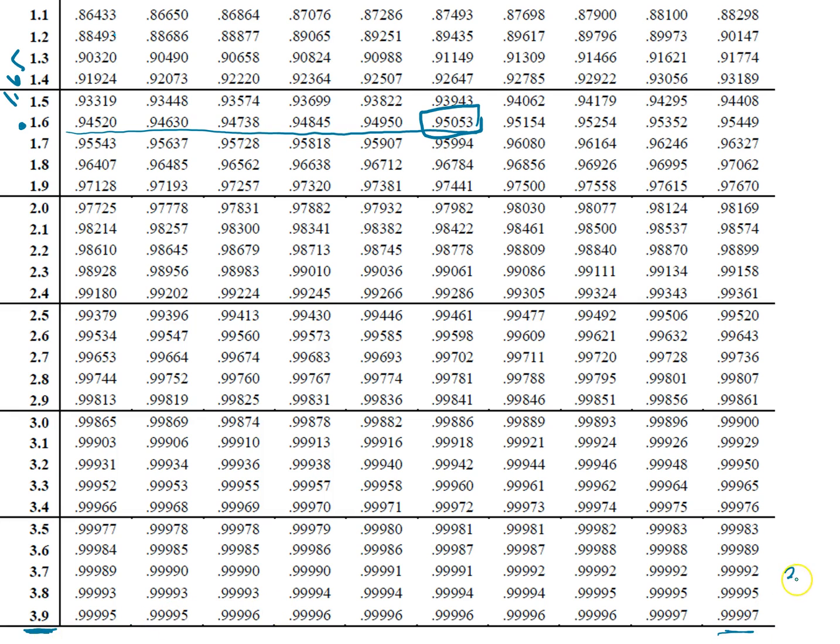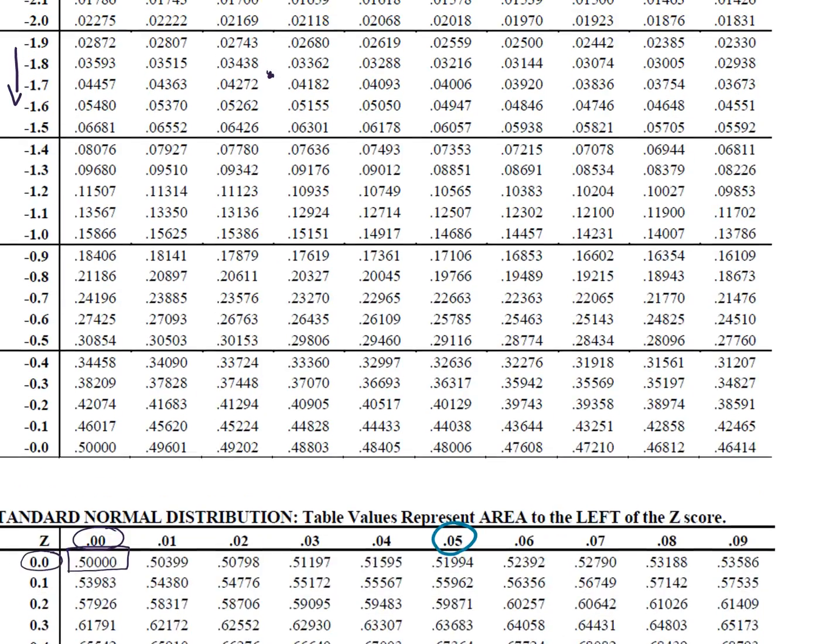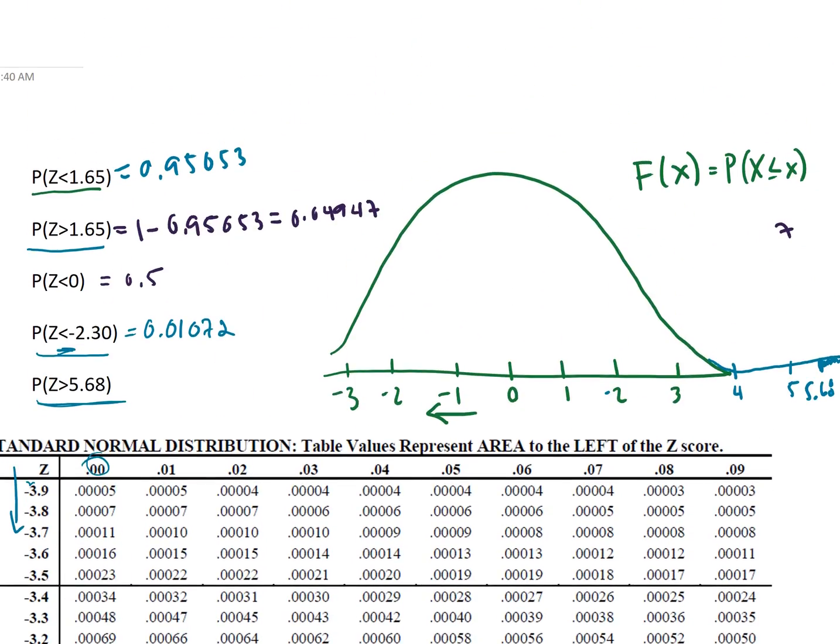So the last value on our table is actually 3.99 and the area that's less than that is 0.99997. So four nines and a seven. So basically we can't even get the exact probability of this but it's going to be so small that it won't necessarily matter.